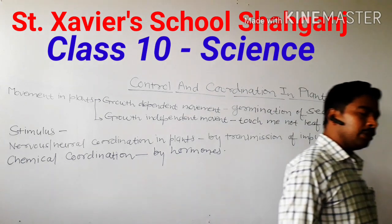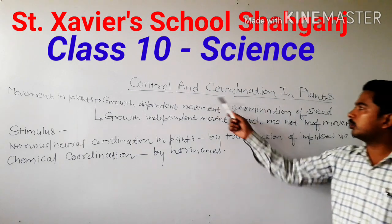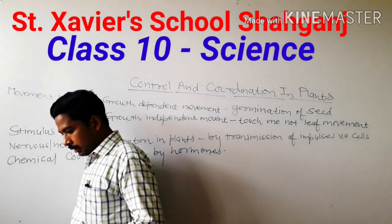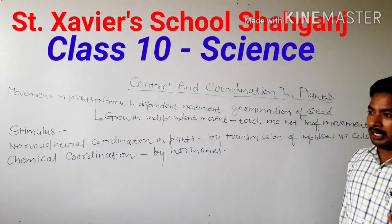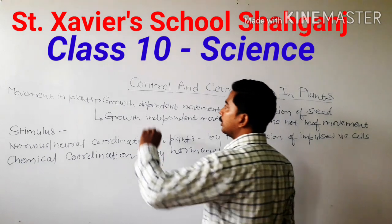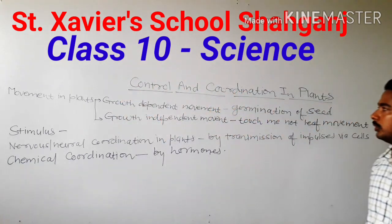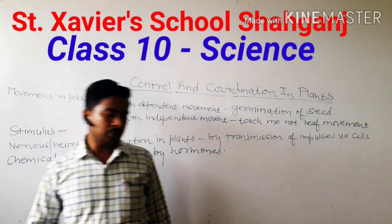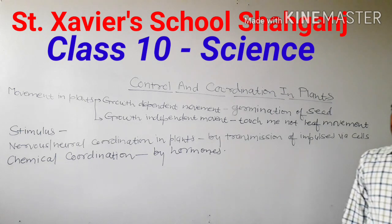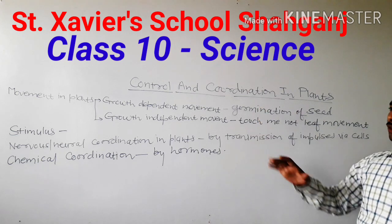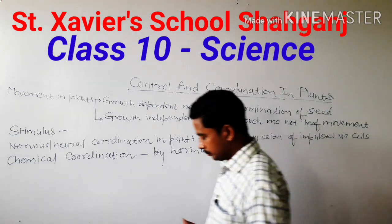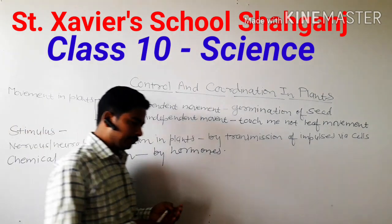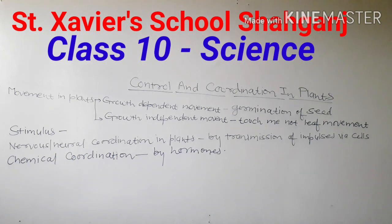Let us first define what is control and coordination. There are two words: control and coordination. In response to environmental changes, when an environmental change takes place, living organisms make a control in their behavior. By controlling their behavior, they try to respond, interact, adjust and accommodate with the changes taking place in the environment. This total process is called control and coordination.